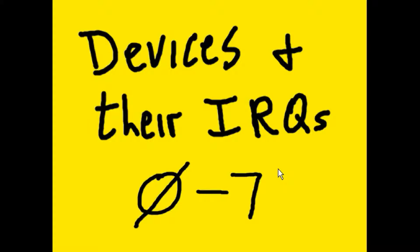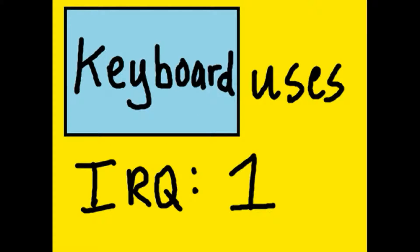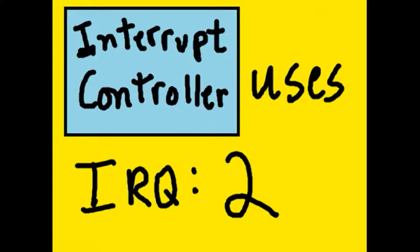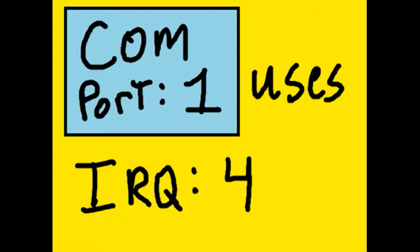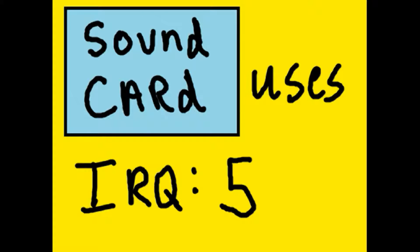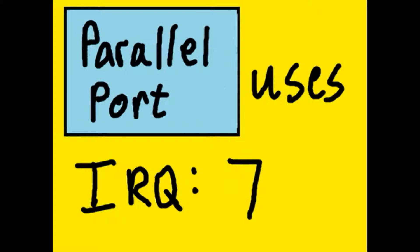We'll be covering devices and their IRQs, IRQ 0 through 7. The system timer uses IRQ 0, the keyboard uses IRQ 1, the interrupt controller uses IRQ 2, Comport 2 uses IRQ 3, Comport 1 uses IRQ 4, the sound card uses IRQ 5, the floppy disk controller uses IRQ 6, and the parallel port uses IRQ 7.